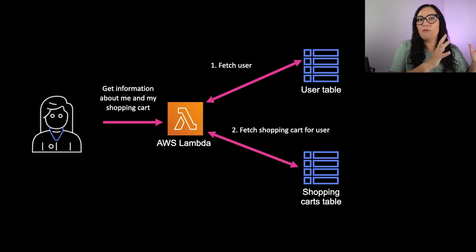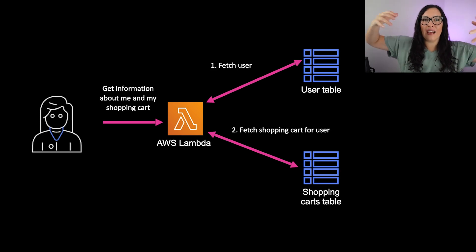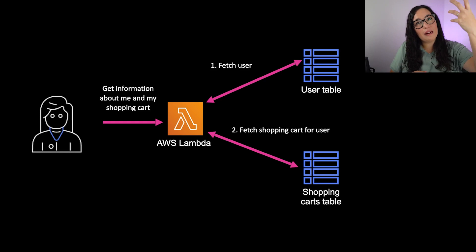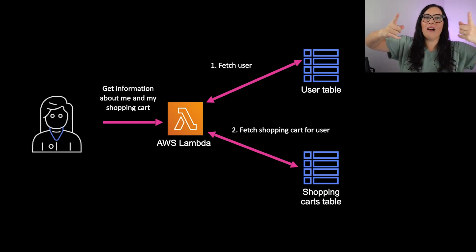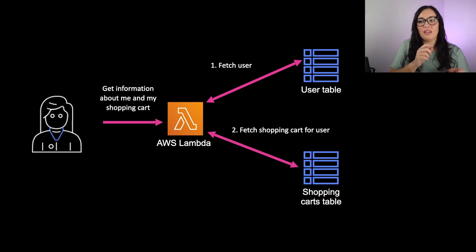Single table design is a way to store data in DynamoDB. If you come from a relational world, you might think about data normalization, which made sense when storage was expensive. You were using normalized tables with a minimal amount of data and joining them together. Relational tables had a lot of power built into joining, but Dynamo doesn't allow you to do joins. Because of that, you end up doing joins in your code, and that makes your code very complicated. When you have a shopping cart from an e-commerce, you fetch the user, get the shopping cart ID, then query the shopping cart table — that's two queries.